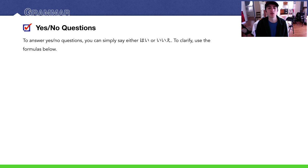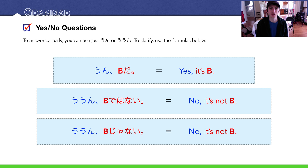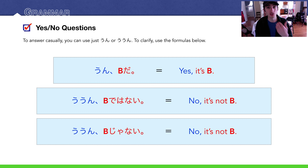To answer, simply use either はい or いいえ, and then clarify using the formula. For example: はい、AはBです. The casual informal way of saying yes or no is うん and ううん — more of a grunt. In English we do this too: we just grunt 'uh-huh' and 'uh-uh.' People just don't realize it.